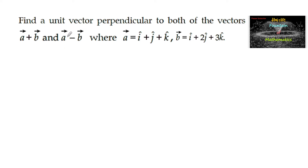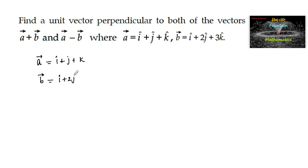Find a unit vector perpendicular to both of the vectors a plus b and a minus b, where a is equal to i plus j plus k and b is equal to i plus 2j plus 3k. Two vectors are given, a and b, and we need to find a unit vector which is perpendicular to both of the vectors a plus b and a minus b.